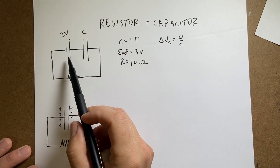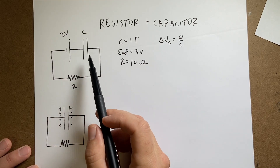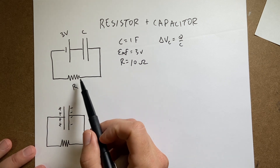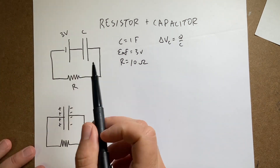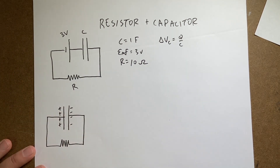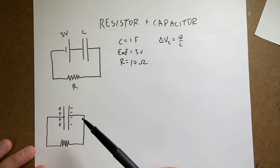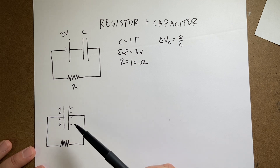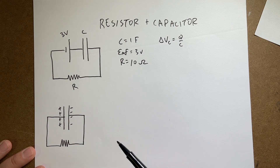So we've looked at batteries, we've looked at capacitors, we've looked at resistors, but what if we use them all together at the same time? And what happens if I take out the battery and I just have a resistor and a capacitor? So that's what we're going to look at.